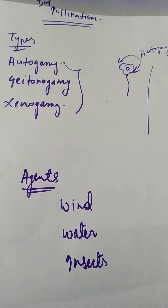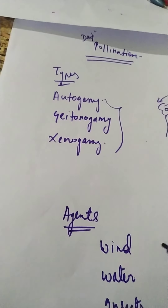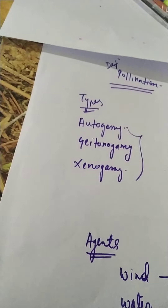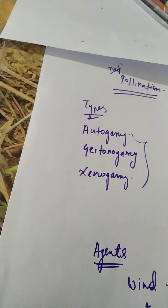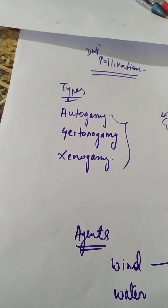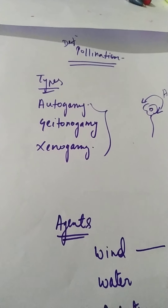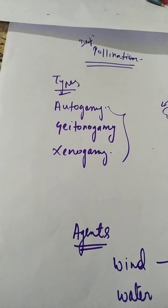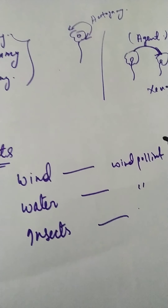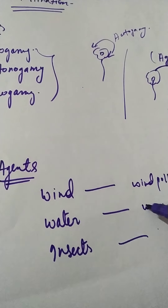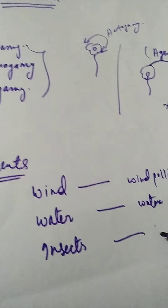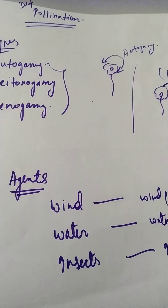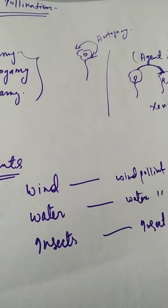So we have wind pollination, water pollination, and insect pollination. These names are given based on the agent responsible for the pollination.